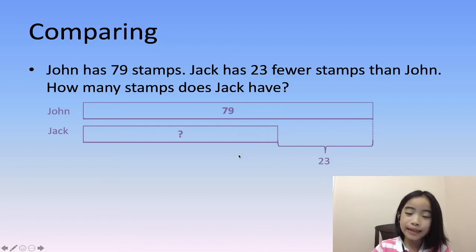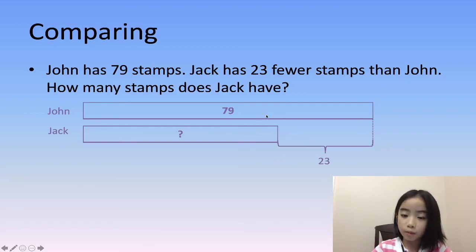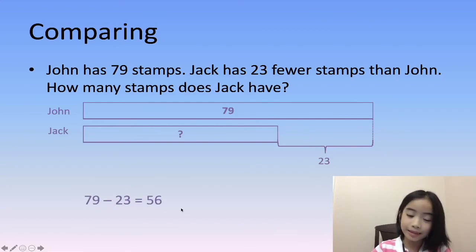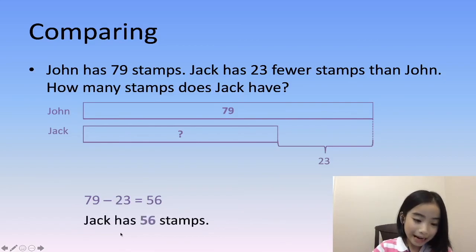From here we know that this is a subtraction problem. 79 minus 23 equals 56, so Jack has 56 stamps.